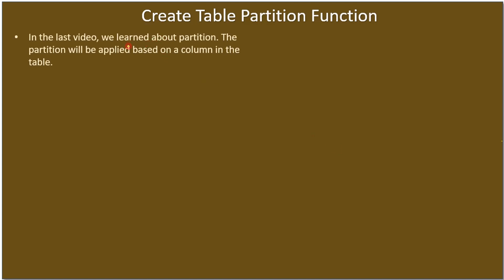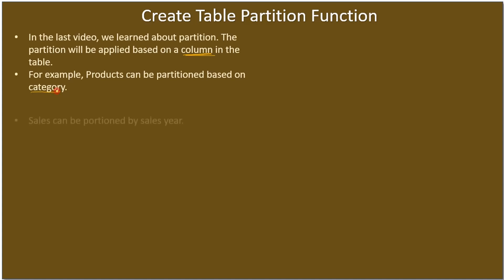The partition will be applied based on a column in the table. For example, with sales data, based on the sales year we can extract the year and group the data, then partition on that group. Products can also be partitioned based on category — if there are millions of products, you can group by product category and partition the table. Sales can be partitioned based on sales year.